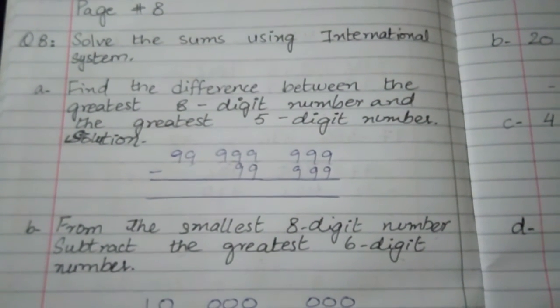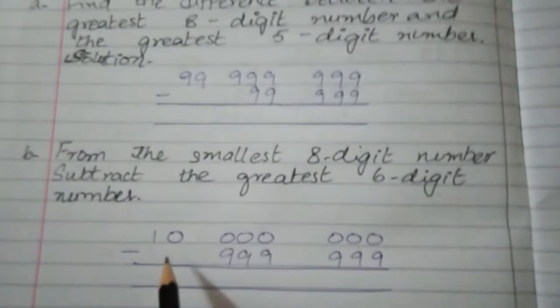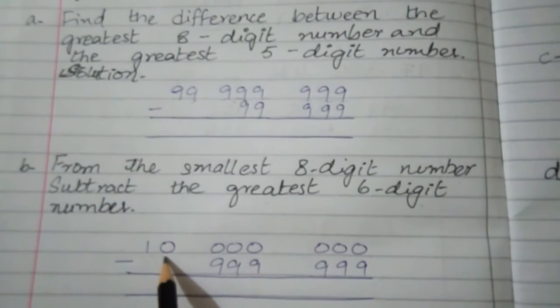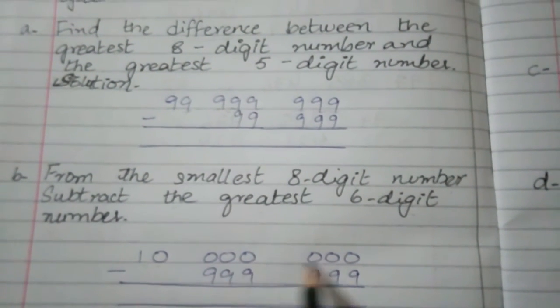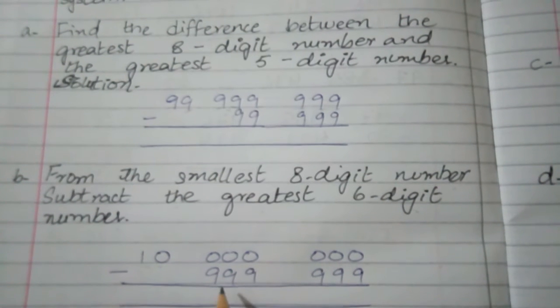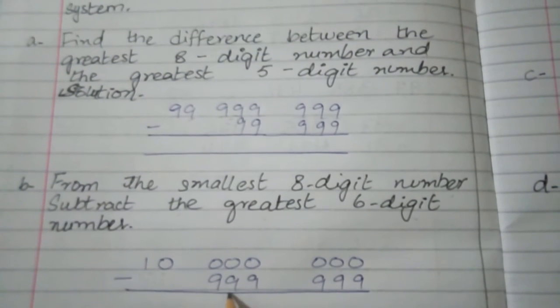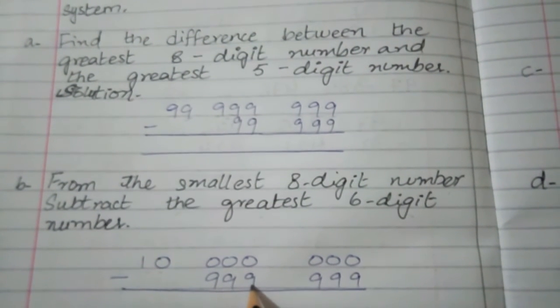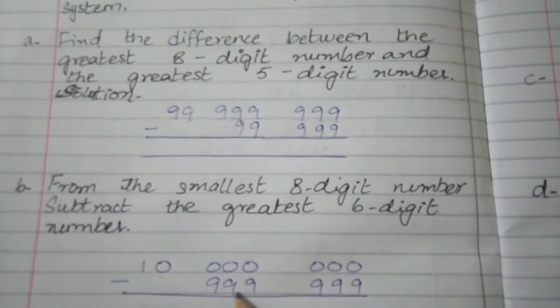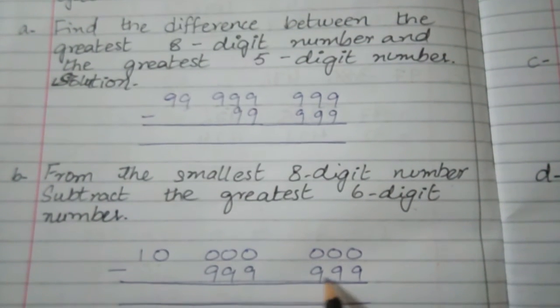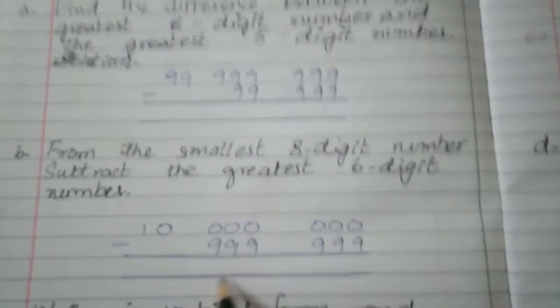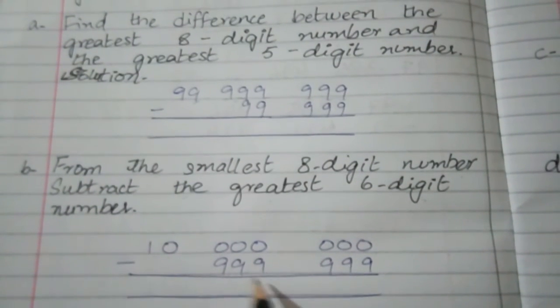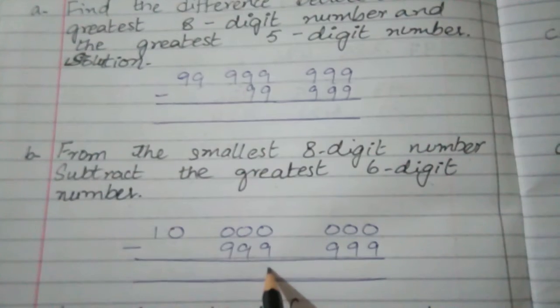The smallest 8-digit number: 1, 2, 3, 4, 5, 6, 7, 8. This is the smallest 8-digit number. So look at it, 10 million is the smallest 8-digit number. And the greatest 6-digit number is 999,999.